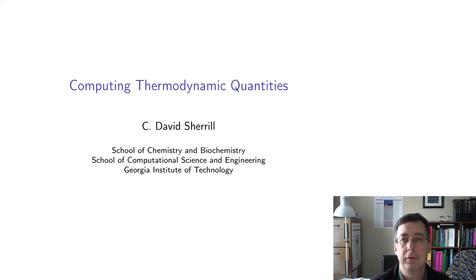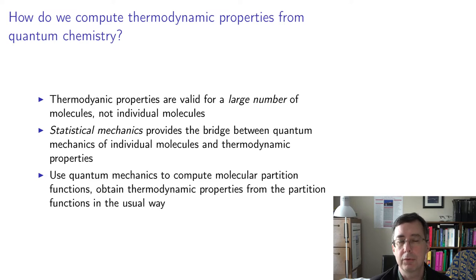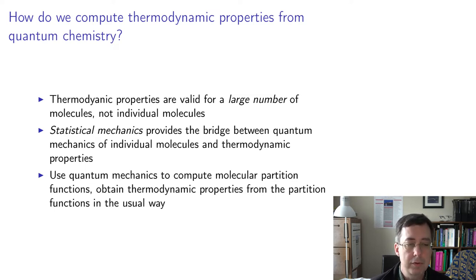First, we should review how thermodynamic properties can be computed in general. These thermo properties are valid only for large numbers of molecules, not single molecules. Because we're dealing with something like Avogadro's number of molecules, we need to use statistics. Statistical mechanics is that branch of theoretical chemistry that tells us how to go from known properties of individual molecules up into properties of bulk samples. We're going to leverage those approaches when we do quantum chemistry calculations of thermodynamic properties.